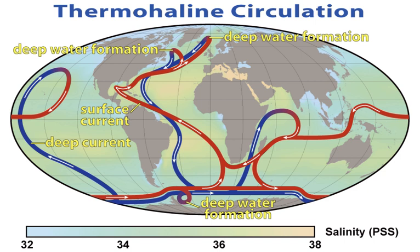In the 1950s, Auguste Piccard invented the bathyscaphe and used the bathyscaphe Trieste to investigate the ocean's depths. The United States nuclear submarine Nautilus made the first journey under the ice to the North Pole in 1958. In 1962 the FLIP floating instrument platform, a 355-foot spar buoy, was first deployed.